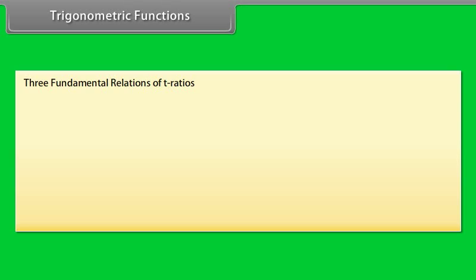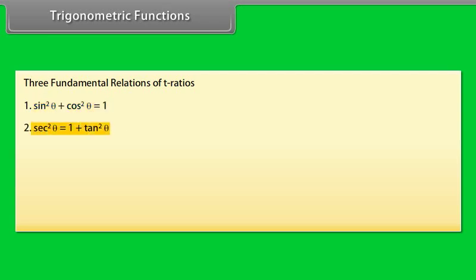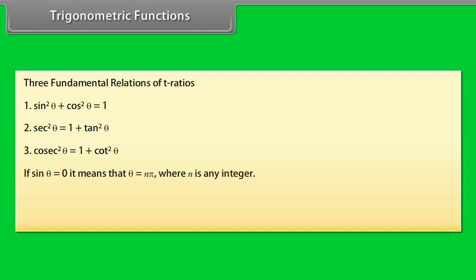The three fundamental identities: sin²θ + cos²θ = 1; sec²θ = 1 + tan²θ; cosec²θ = 1 + cot²θ. If sin θ = 0, then θ = nπ where n is any integer. If cos θ = 0, then θ = (2n+1)π/2 where n is any integer.